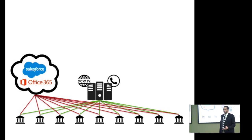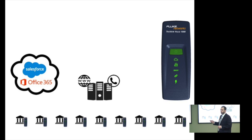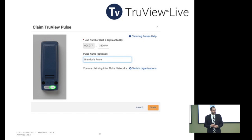TrueView Live exists to help you get rid of that problem and give you eyes to every corner of the network. This is a TrueView Pulse — it is a purpose-built piece of hardware. To get visibility to all of the bank branches, you would put a Pulse at every bank branch location and log on to www.trueviewlive.com. You claim each of your Pulses into your account and TrueView Live will know that you own those.